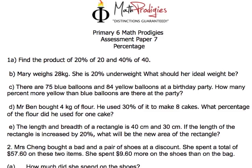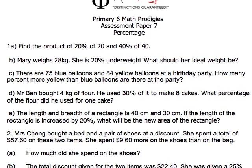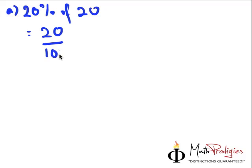The question says, find the product of 20% of 20 and 40% of 40. So all you have to do for part A is find 20% of 20. 20% of 20 is equal to 20% is 20 over 100, of means times and 20 means 20. So cancel the zeros and you have 2 times 2, which gives you 4. 20% of 20 is 4.